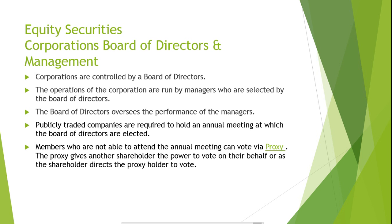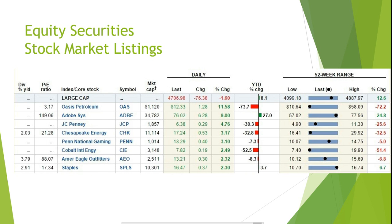Here is a listing of stocks traded on the New York Stock Exchange. The New York Stock Exchange, called the NYSE for short, is one of several markets that stocks are traded on. In this listing, let's examine and interpret Chesapeake Energy. Under the symbol column, you can see that it reads CHK. This is the stock symbol or stock ticker symbol for Chesapeake Energy.